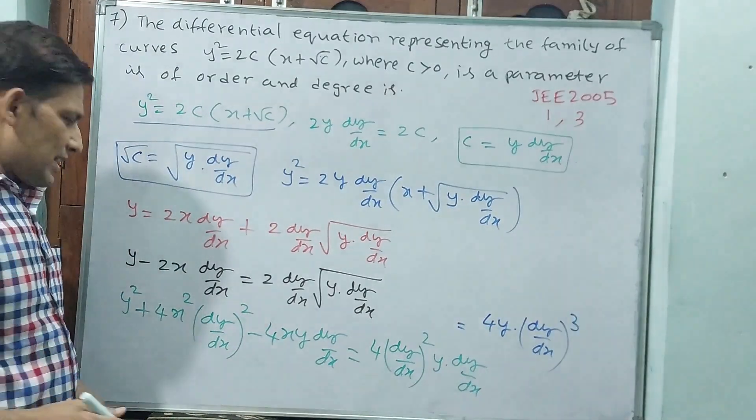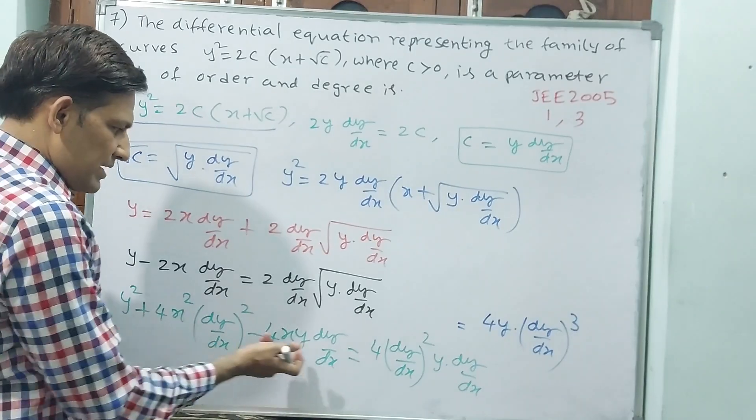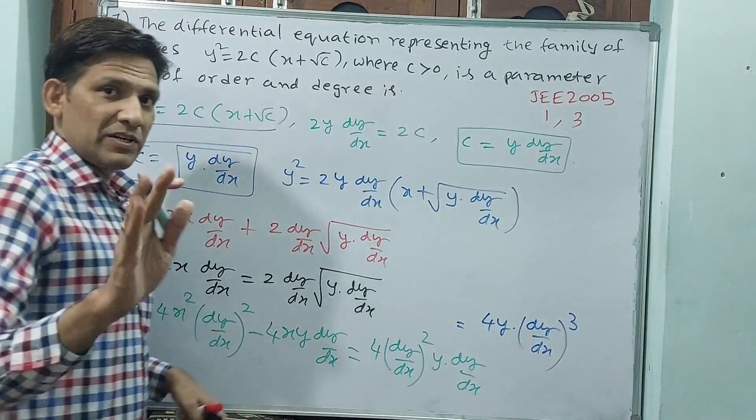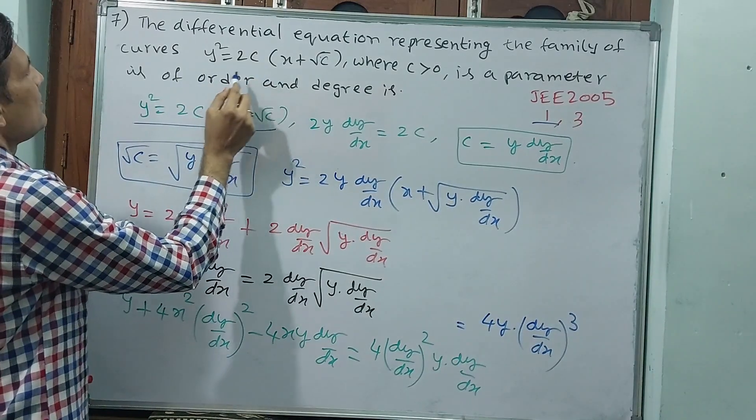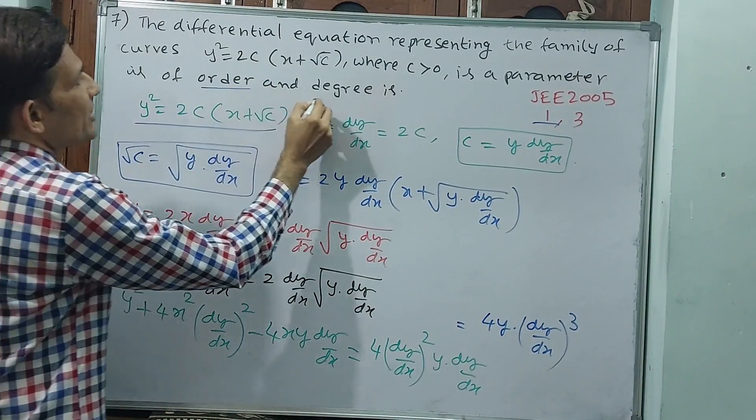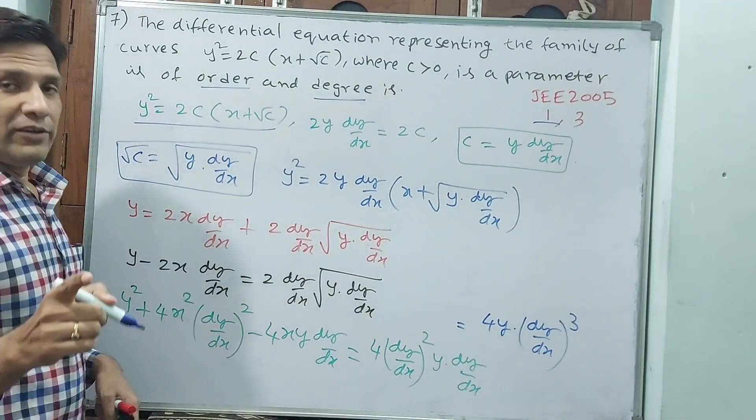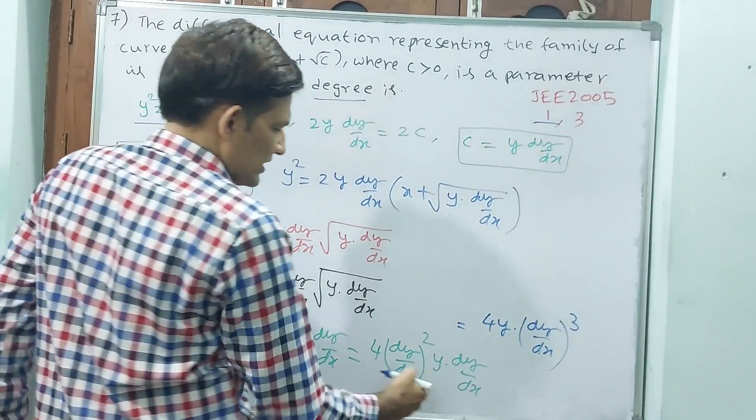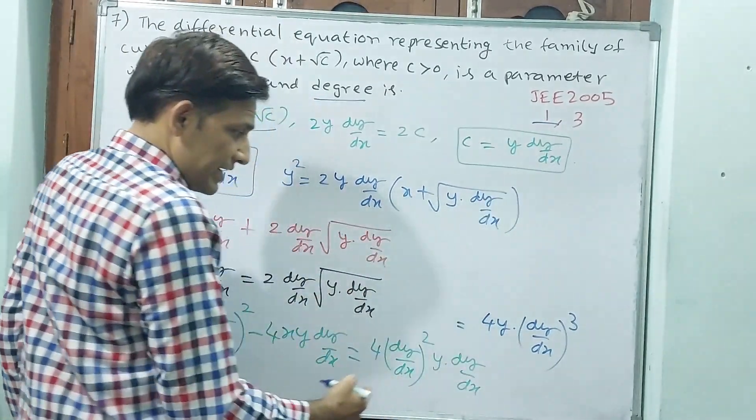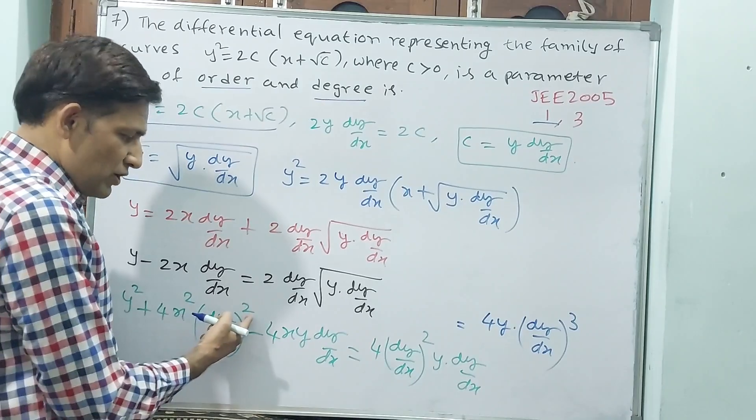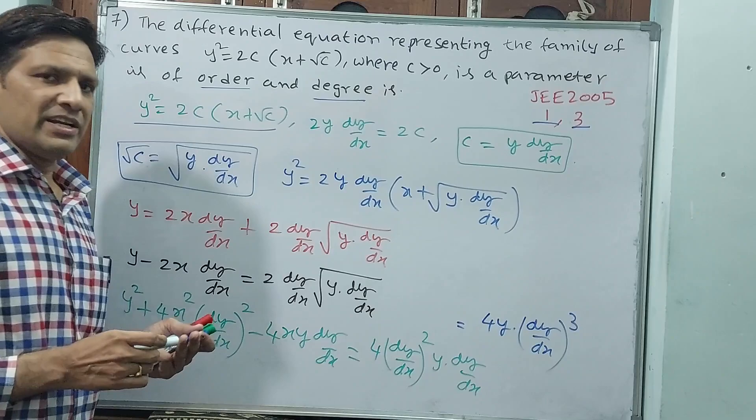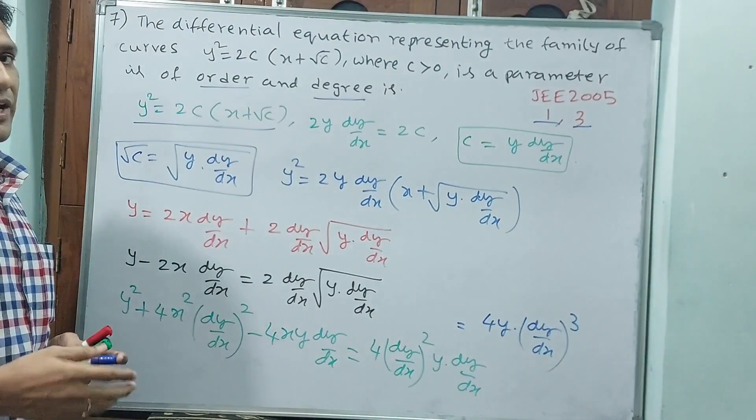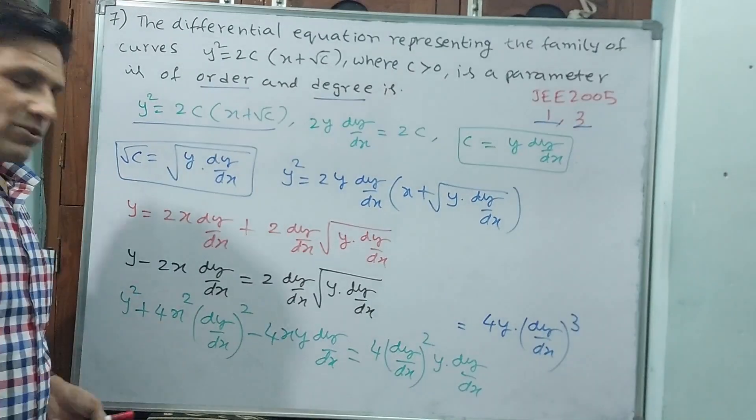What is the highest order? Highest order is dy/dx only, that means first order. Why? Because first they are writing order, then degree. Order means first order. Highest degree here, is it only 2? But here, 3. Highest degree is 3. First order, third degree is your answer. Let us go for next question.